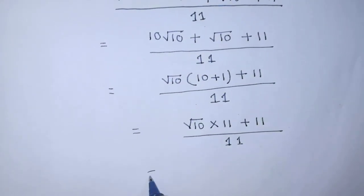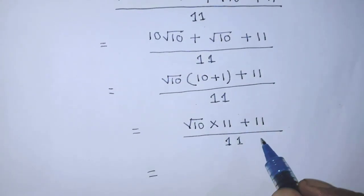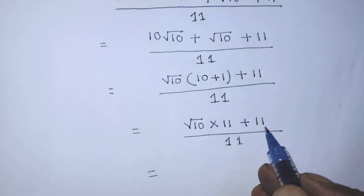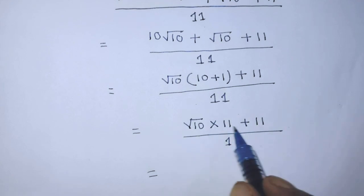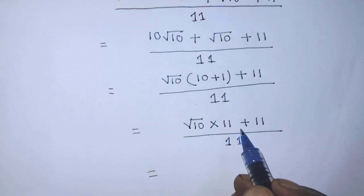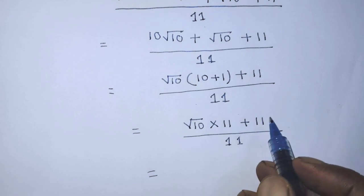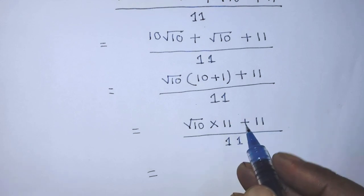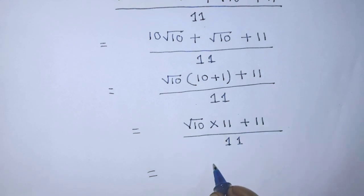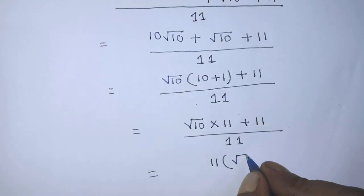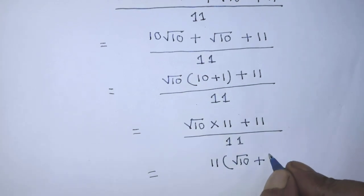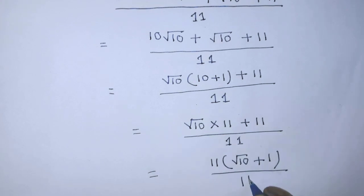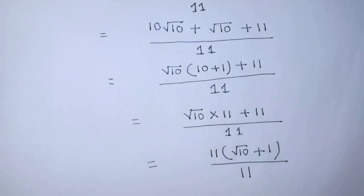In this fraction, in the numerator there are two terms and the common factor of both terms is 11. So it will be 11 times (square root of 10 plus 1) over 11.